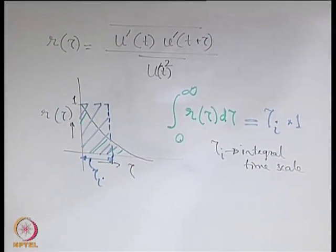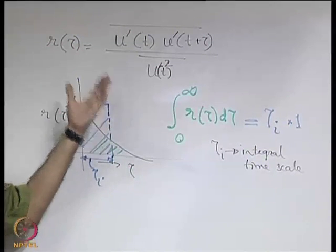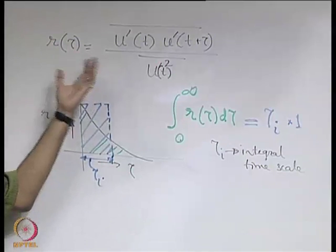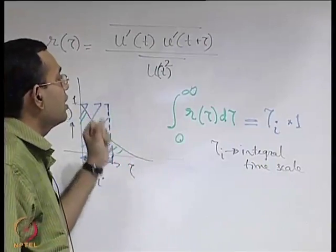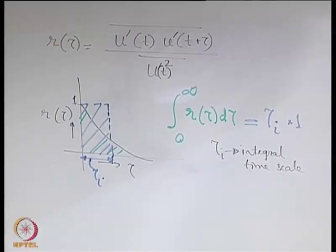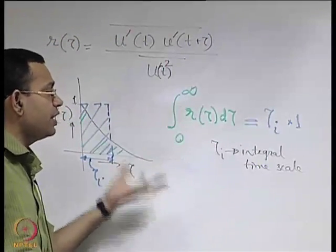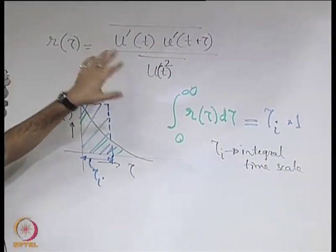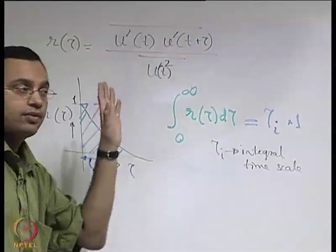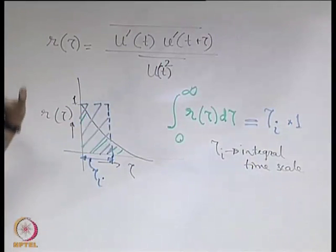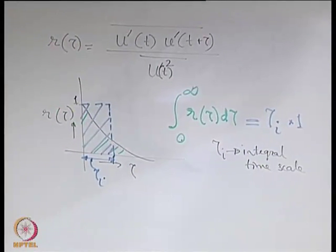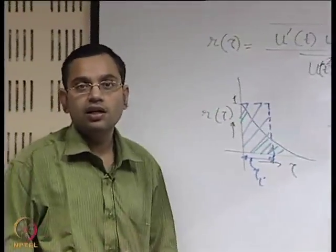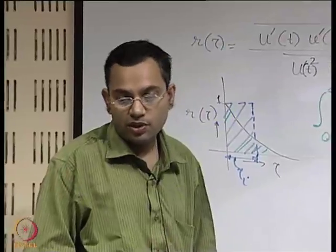The integral time scale is physically a representative time scale over which a random variable — here the random variable is the velocity fluctuation — is strongly correlated to itself as an outcome of the statistical averaging over the random experiments. Similar scales may be obtained by considering other types of correlation functions such as cross-correlation functions, where you may try to find a correlation between u prime and v prime. Our main emphasis here is to develop a building block for the basic statistical description of turbulent flows.